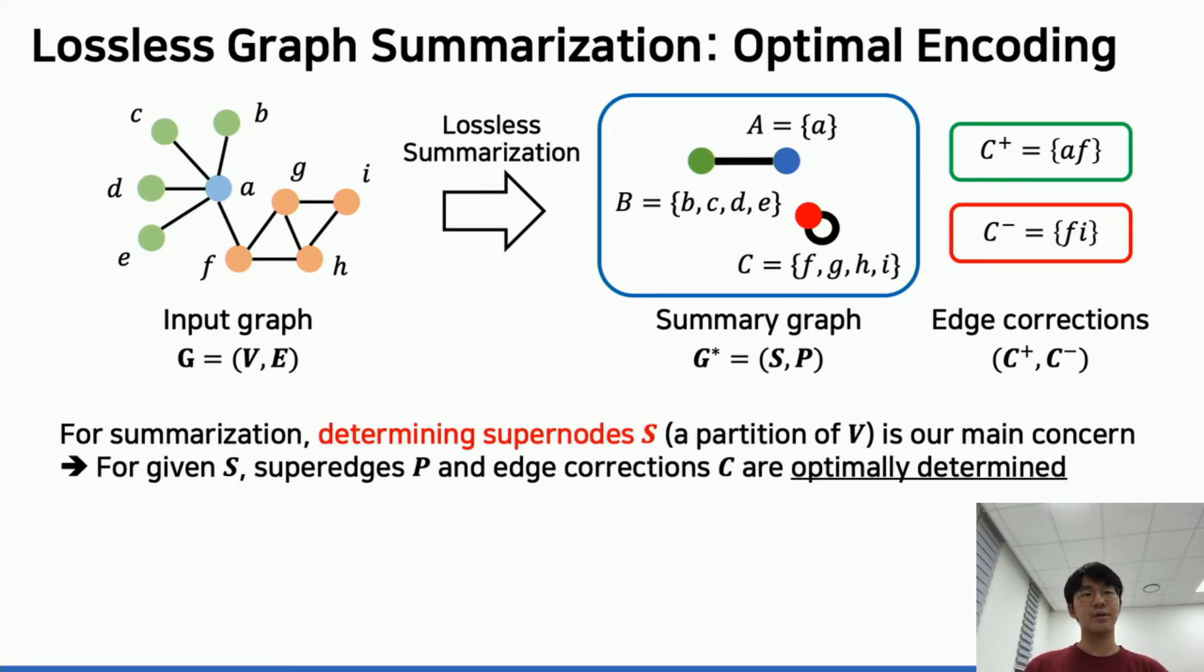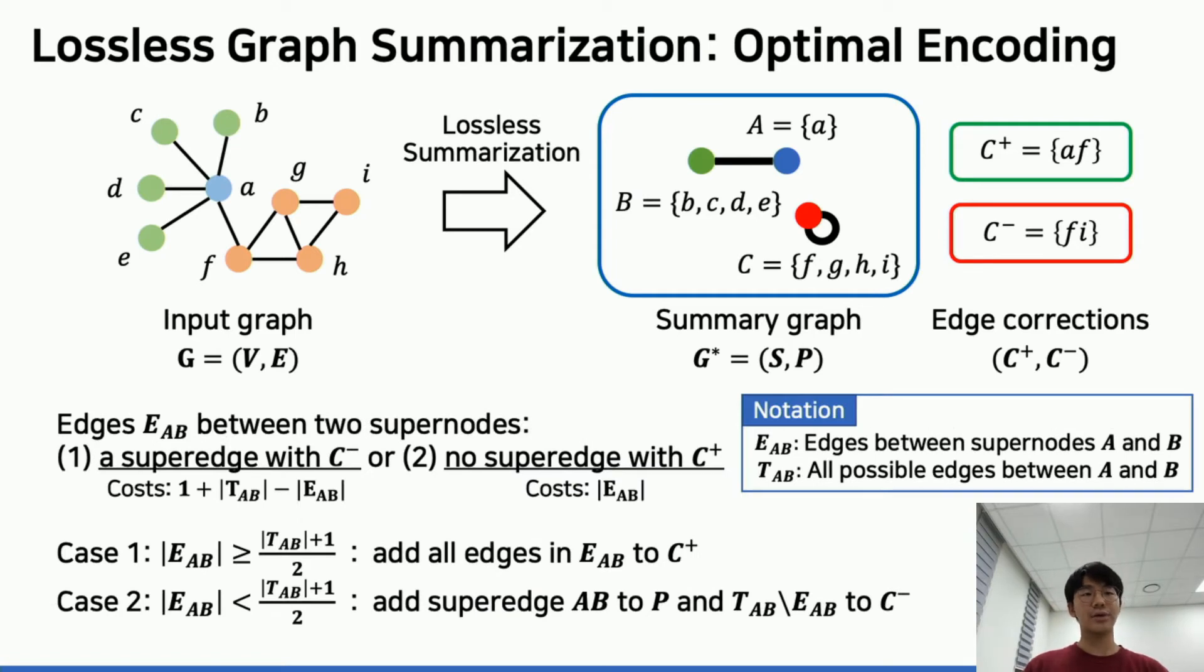In lossless summarization, all we need to care about is determining super nodes. Original edges between two super nodes can be described by either using a super edge with some error edges corrected by C^-, or only using C^+. For the former, we need 1 + |T_AB| - |E_AB| edges. For the latter, the description cost is |E_AB|. When the former cost is larger, we better only use C^+. When the latter cost is larger, we better use a super edge with C^- residual graph.